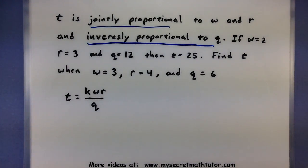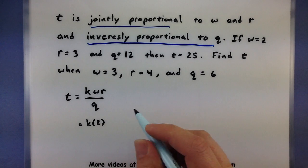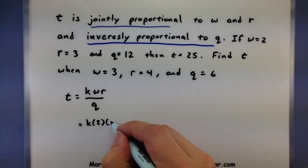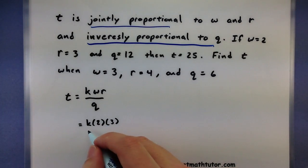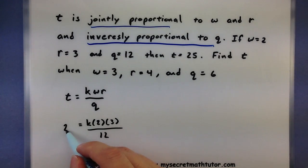Now let's go ahead and put in some information and actually solve for the k. So if w equals 2, so k times 2, r equals 3, and q equals 12, then t will equal 25.